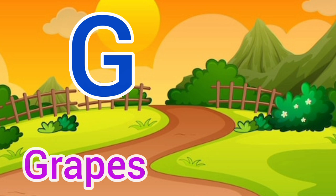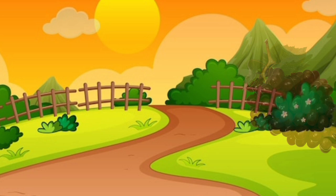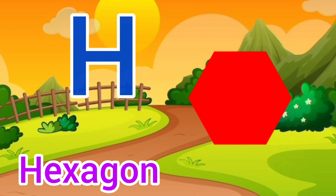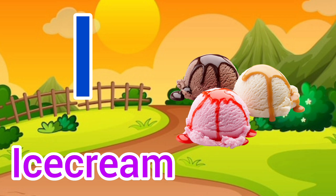G for grapes, grapes means anggur. H for hexagon, hexagon means sashtabhuj. I for ice cream, ice cream means ice cream.